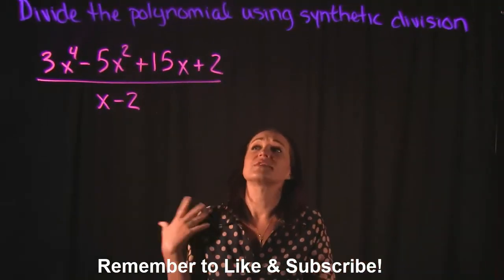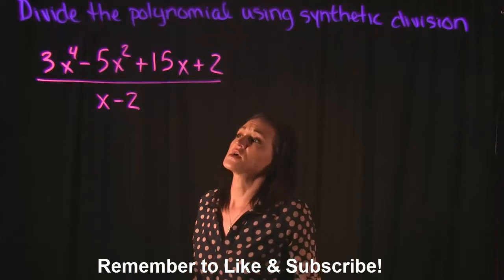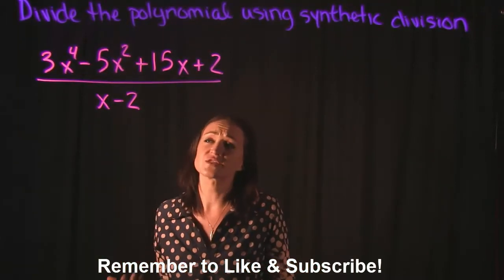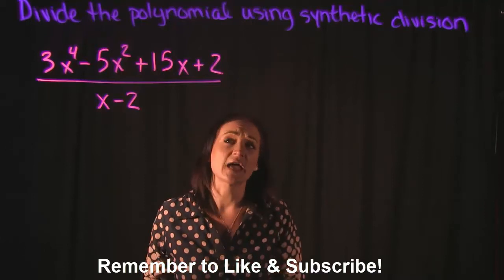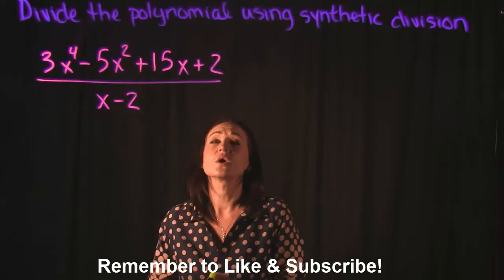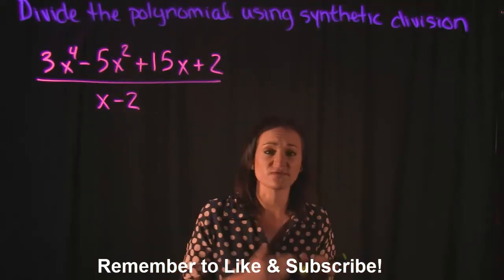So for this problem, we're going to divide the following polynomial using synthetic division. We have 3x to the 4th minus 5x squared plus 15x plus 2, and we're dividing this by x minus 2. So they want us to use synthetic division in order to do this division.